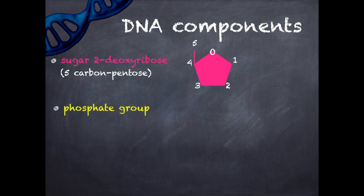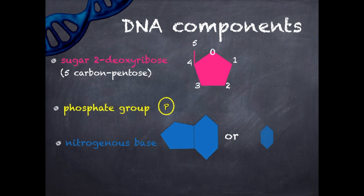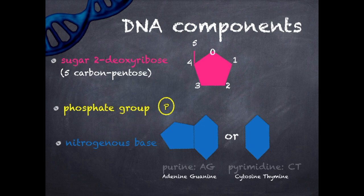The second chemical component is a simple phosphate group, which we will present like this. And the third one is a nitrogenous base, which can be in a form of a two-ringed purine, adenine and guanine, or a single ring structure known as pyrimidine, such as cytosine and thymine.